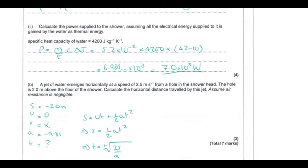To find the power supplied, we use Q = mcΔT, so power equals mcΔT divided by time. Since we have the mass flow rate, we substitute to get power equals mass flow rate times specific heat capacity times temperature change, giving 6980 W — or 7.0 times 10 to the 3 watts to two significant figures.